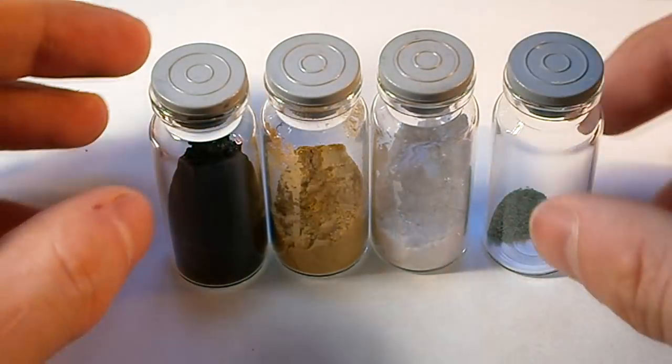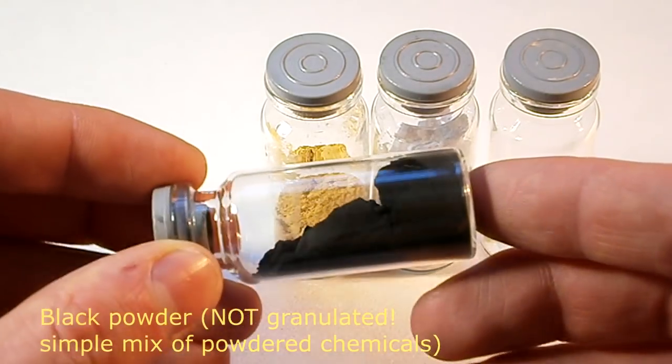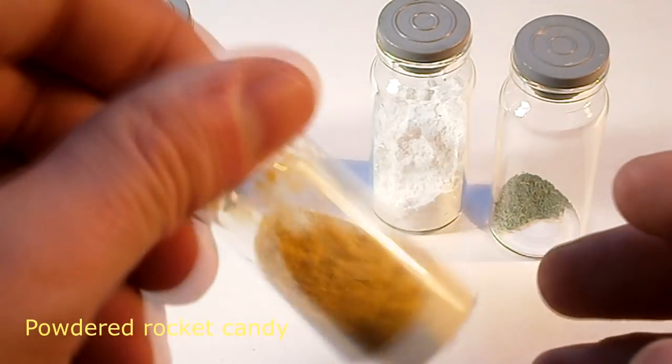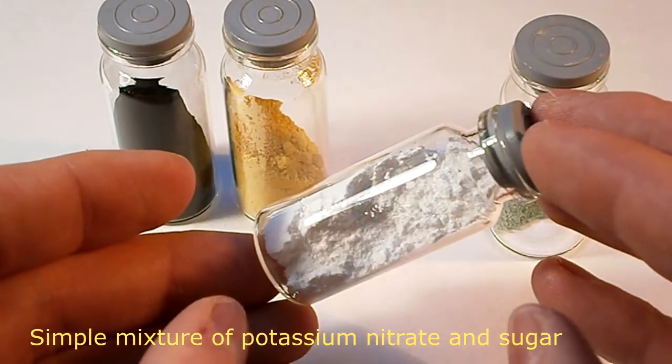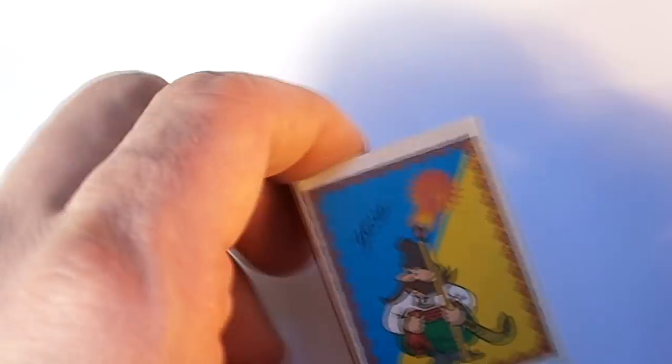At first you need some kind of slow burning mixture. This can be black powder, rocket candy. It's not necessary to have exactly cooked rocket candy with catalyst. Simple mixture of sugar and potassium nitrate will work as well. Even powder from match heads can be used.